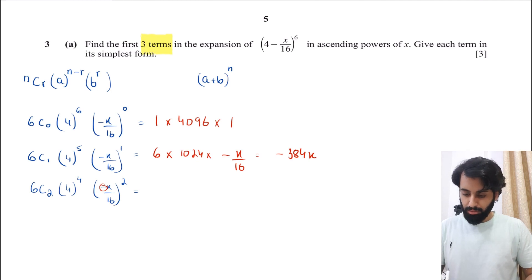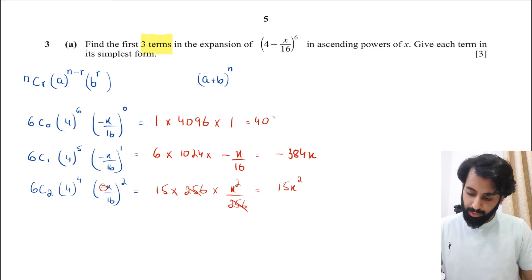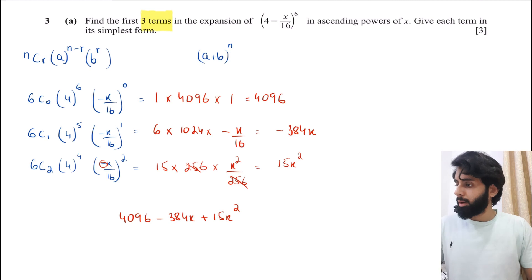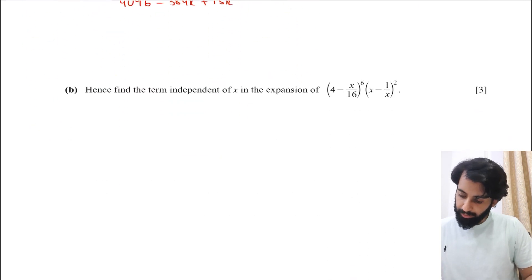So 6C2, that's something we need to work out. 6C2 is 15. 15 × 4^4, which is 256. So 256 × x^2/16^2. 16 squared is 256. So 256 and 256 get canceled out, and you're simply left with 15x^2. Now let's write all of this nicely. So the first term is 4096. I find it neater to find the terms vertically, and then when I'm writing the final answer, I'll write it horizontally. So this becomes 4096 - 384x + 15x^2, which is the correct answer.